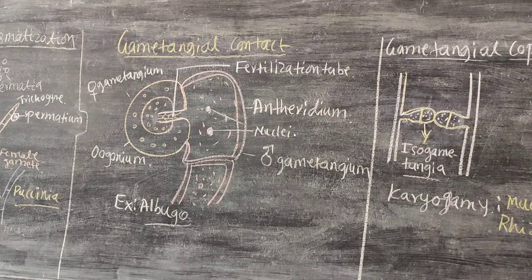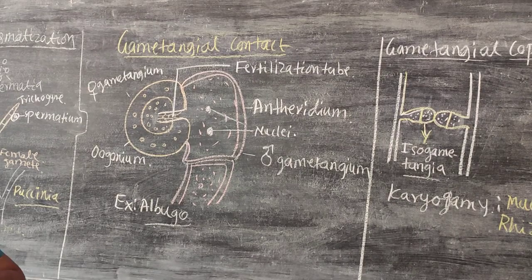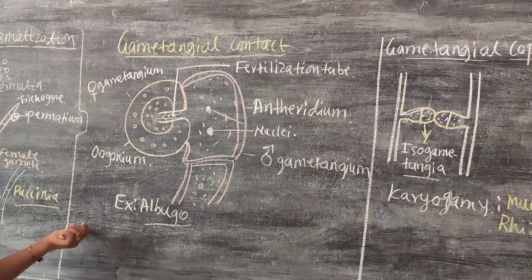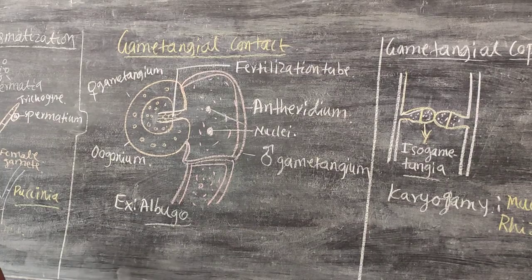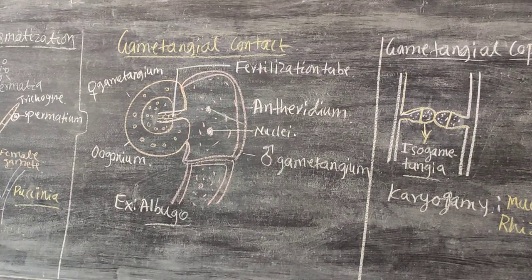Coming to different modes of reproduction — the sexual mode of reproduction. In some cases, like Albugo, there is no formation of male and female gametes. In such cases, what happens is they produce the gametangium.